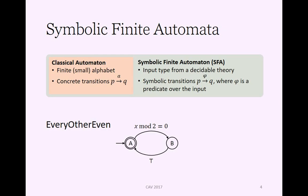So now for some background. If you were at Loris's tutorial, this might already be familiar. A classical automaton has a finite, typically smallish alphabet. In a symbolic finite automaton, this is replaced with a type from some decidable theory, which might be provided, for example, by an SMT solver.